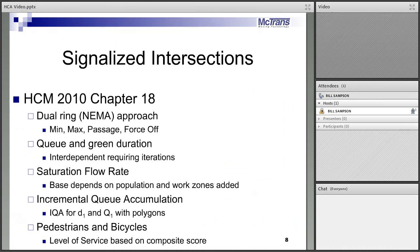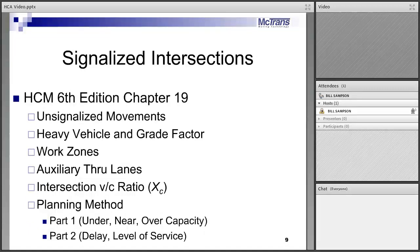I'm going to move through these next slides quickly. In signalized intersections in 2010, we finally recognized NEMA control signals, which is a big change, but probably an even bigger change is the ability to predict phase duration for actuated phases. You need to know how long the actuated phase is on average over multiple cycles in a 15-minute period to compute capacity from saturation flow. A couple of defaults are provided for saturation flow. The D1 uniform delay equation was improved. Pedestrian and bicycle level of service were added. In the 6th edition, free right turns or unsignalized movements are now included in the averages for signalized intersections. The heavy vehicle and grade factor was updated. Work zones approaching the signal are now modeled. Auxiliary through lanes generate the lane utilization adjustment factor. The ICU and planning method were restored from the 2000 manual.